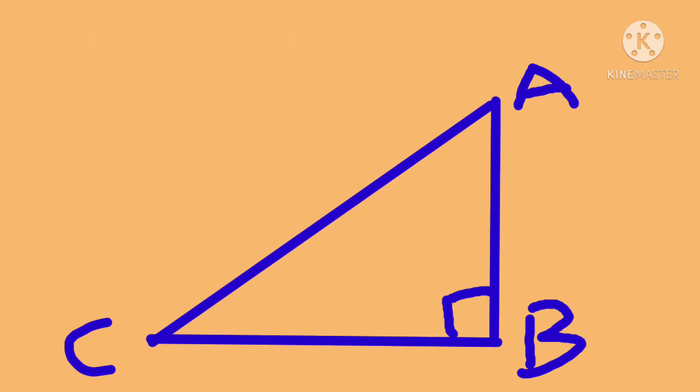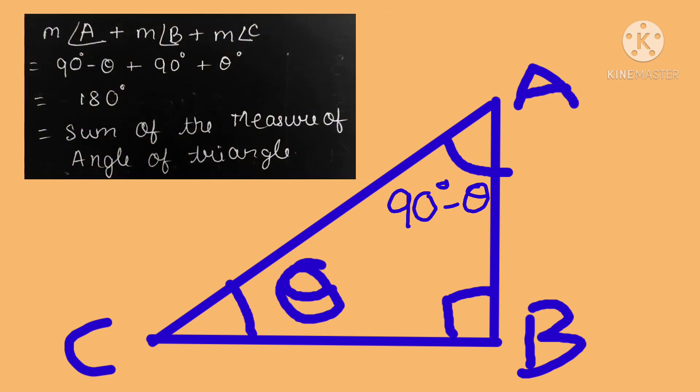One angle we have already represented as 90 degrees because of the right angle triangle, and the other angle we don't know the measure. So we will represent one of the angles as theta and what will be the other angle? That will be 90 minus theta. If we sum each and every angle of the triangle, we will get the answer 180 degrees.